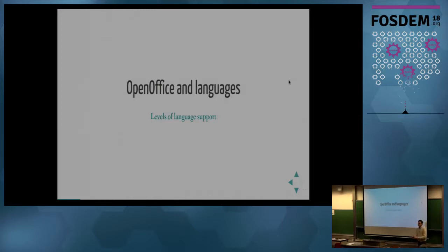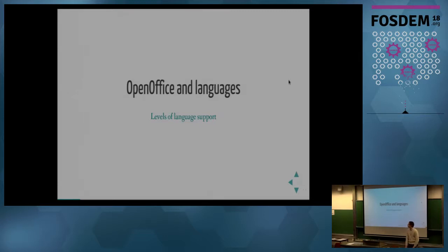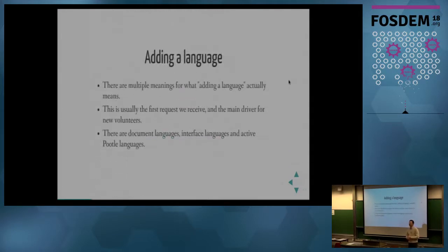Why is localization a key field? Because a lot of new people join the project by starting with localization. It is a typical request that we receive — a volunteer would be able, in some undefined way, to help the project by contributing to localization and not starting with development or documentation, but usually they just want to see OpenOffice translated into their language. There are a lot of political factors and other reasoning that can be really motivating for a new volunteer.